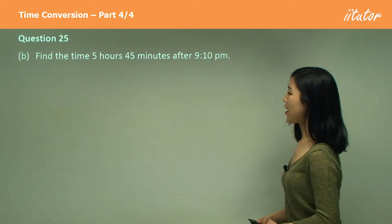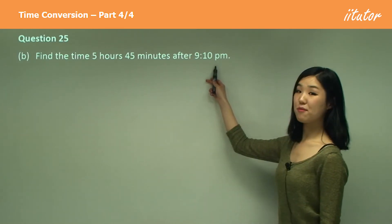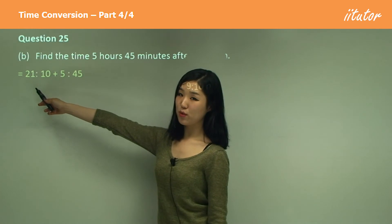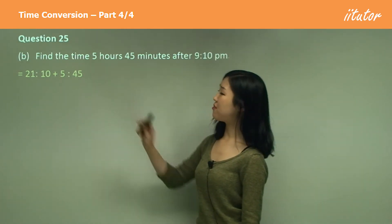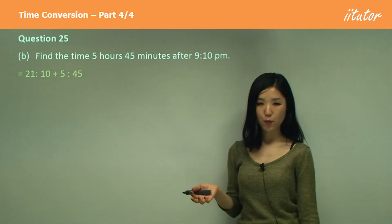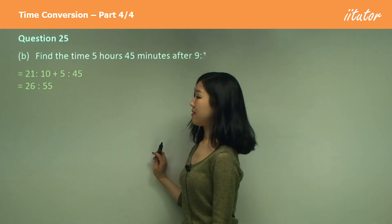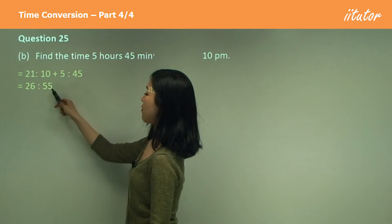Find the time 5 hours 45 minutes after 9:10. So 9:10 is 21:10, isn't it? 24 hours. And we add on 5:45. So always trying to work with 24 hours. So again, that's going to be something like this, because 10 plus 45 is 55.